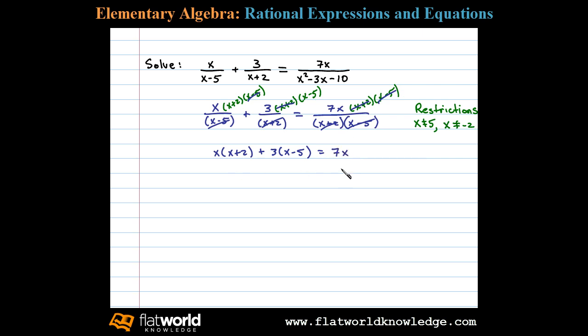Multiplying both sides by the LCD clears the fractions. We solve the remaining equation, in this case it's quadratic. Distributing we have x squared plus 2x plus 3x minus 15 equals 7x. Same side like terms: x squared plus 5x minus 15 then equals 7x.